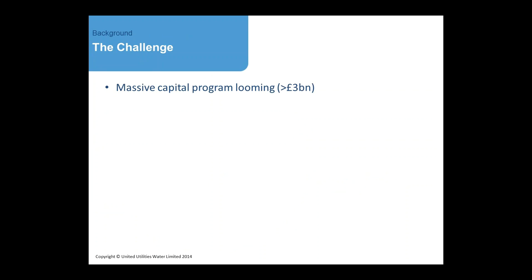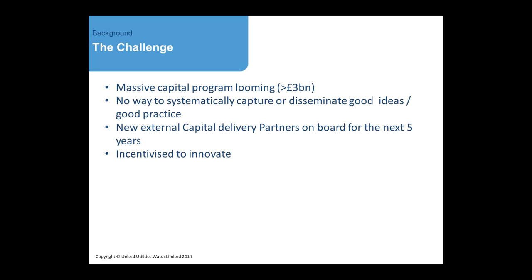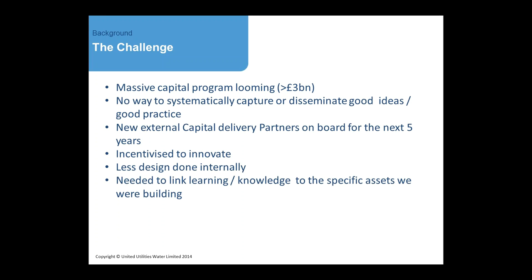Before I start to talk about ROC, it's worth mentioning the size of the challenge we have within United Utilities. For the next just over four years remaining of this asset management plan period, we've got a massive capital program of about three billion pounds, and perhaps we've got no way to systematically capture or disseminate good ideas and good practice. We've got new capital delivery partners on board for at least the next five years, and we're all being incentivized to innovate. We'll be doing less work internally and more done by the capital delivery partners. And we need to link our learning and our knowledge to the specific assets that we're building.